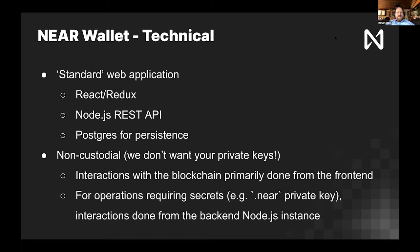For us, the front end is responsible for most of the transaction submission to the blockchain. The back end is only used for blockchain interactions that require secrets. One example: to create an account under the dot-near top-level account, we use a private key for that NEAR account that we don't want the browser to have. This allows people to create accounts like 'daryl dot near' without having the key for the root NEAR account, which would allow things like mass account creation — something we obviously want gated through normal wallet usage.